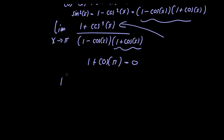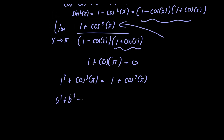Notice that 1 cubed plus cosine cubed of x is equal to 1 plus cosine cubed of x, because 1 raised to any power is just equal to itself. That means we can factor the numerator using the sum of cubes formula. The sum of cubes formula is: a cubed plus b cubed is equal to a plus b multiplied by a squared minus a times b plus b squared.